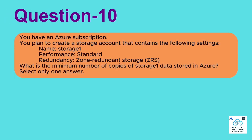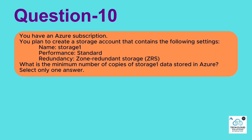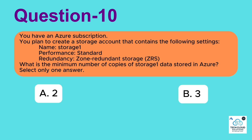Question 10: You have an Azure subscription. You plan to create a storage account with the following settings. Name: Storage 1. Performance: Standard. Redundancy: Zone Redundant Storage (ZRS). What is the minimum number of copies of Storage 1 data stored in Azure? Select only one answer. A. 2. B. 3. C. 6. D. 9. Correct answer: 3.